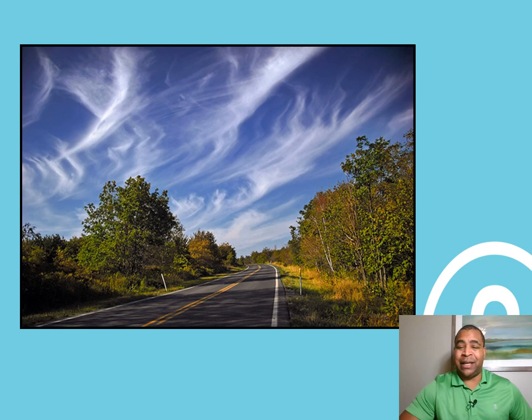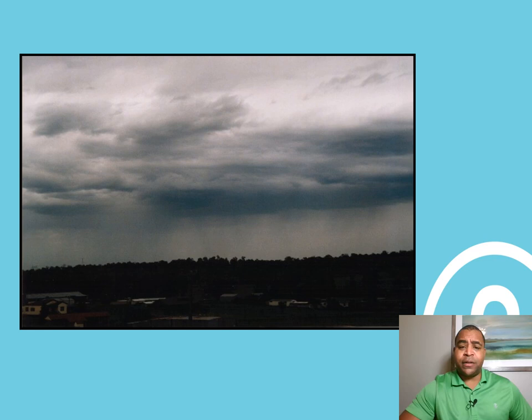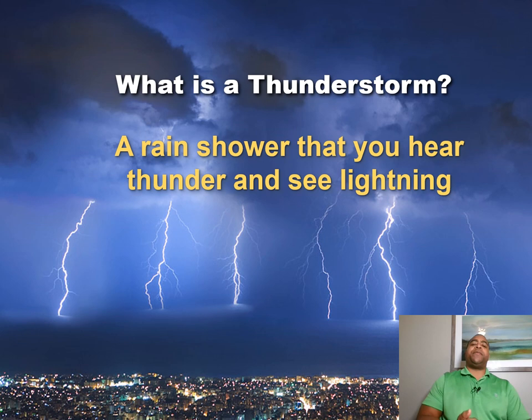Cirrus clouds are usually high in the sky and not really associated with any moisture. Sometimes you can even see a rainbow with some of these clouds. And these are the stratus clouds — they're usually only associated with rain showers. Every now and then you'll hear of a thunderstorm from a stratus cloud, but usually it's associated with cumulus clouds.